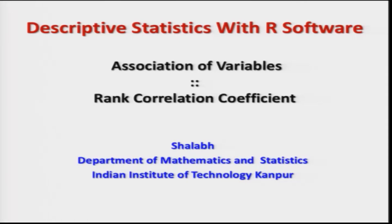Welcome to the lecture on Descriptive Statistics with R Software. In the last two lectures we discussed the concept of correlation coefficient and how to compute it in R software. When we started the discussion on the association of two variables, we had discussed three possible situations where we would like to measure the degree of association.